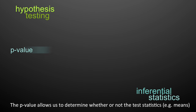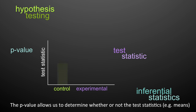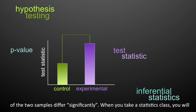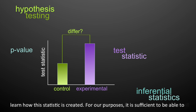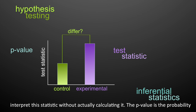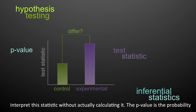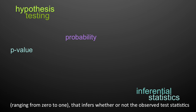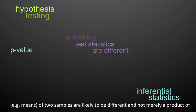The p-value allows us to determine whether or not the test statistics — for example the means — of the two samples differ significantly. The p-value is a probability ranging from 0 to 1 that infers whether or not the observed test statistics of two samples are likely to be different and not merely a product of chance.